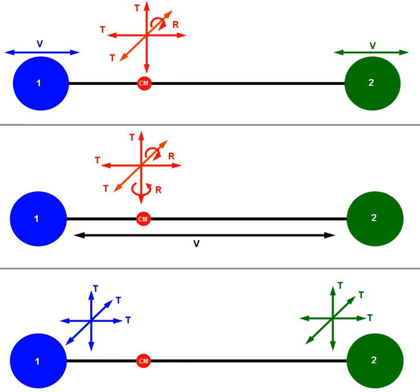The location of a particle in three-dimensional space requires three position coordinates. Similarly, the direction and speed at which a particle moves can be described in terms of three velocity components, each in reference to the three dimensions of space.